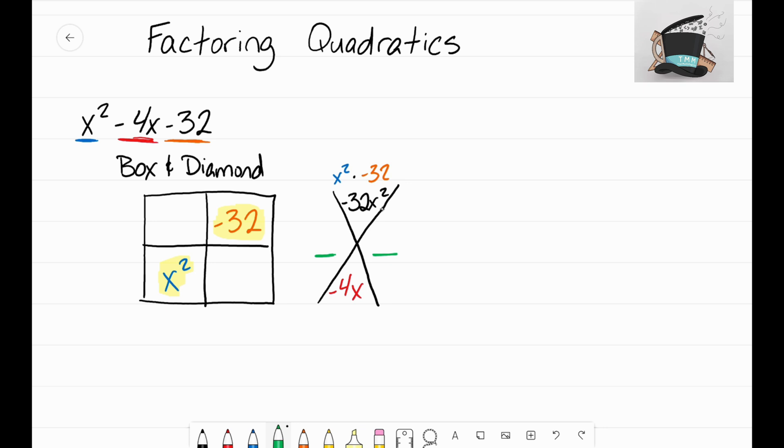So what you want to do is get a factor chart out, and you want to look at what are the factors of negative 32. When you're looking at that factor chart for negative 32 and you see all the different factors, you also have to think about which of those factors add up to negative 4.